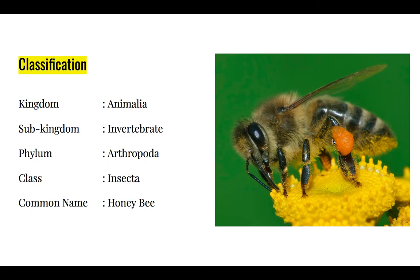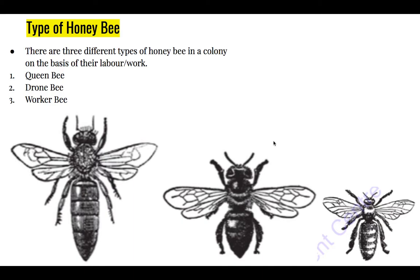Head, thorax, and abdomen. The common name is honeybee. As you can see here, this is a worker bee, and here you can see the pollen bag. This pollen bag is used to collect pollen grains and nectar.